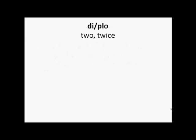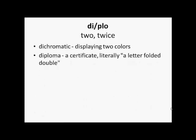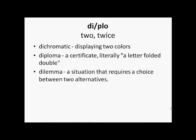'Di' or 'diplo' means two or twice. So dichromatic means displaying two colors. Diploma is a certificate — it literally means a letter folded double. And dilemma is a situation that requires a choice between two alternatives.